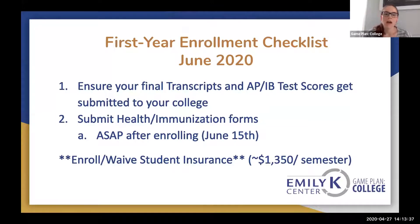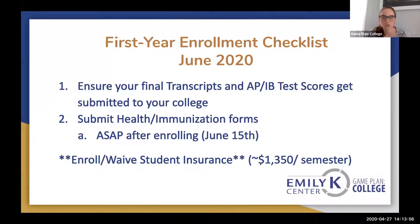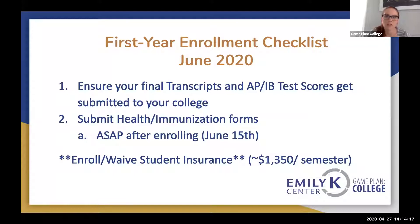After you graduate, there are still things you need to do to ensure you're ready for campus in the fall. You need to send your final transcripts from your high school, as well as your AP and IB test scores, to your college. Colleges want to see your final transcript to make sure you didn't stop trying after getting accepted. AP and IB scores can help you place out of entry-level English or math courses, which helps with scheduling. Your high school counselor will likely ask where you're going so they can send your records.